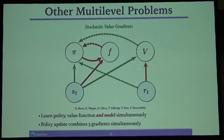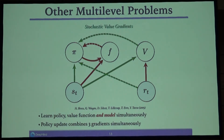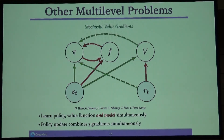You can do other variations like stochastic value gradients, where you simultaneously learn a policy, an environment model, and a value function, updating the policy based on gradients of both the model and reward simultaneously. Once you're comfortable with optimizing multiple losses with deep networks, you can combine these things into many complex models. Especially with good heuristics for optimization, the frontier of what's possible expands — but these models are all very difficult to optimize.